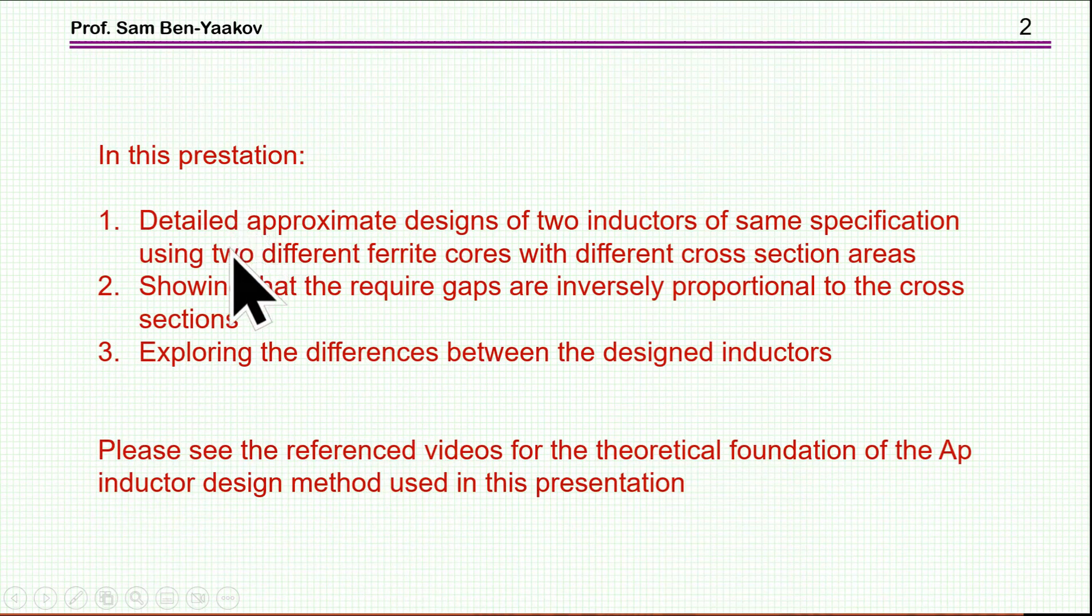In this presentation, I'm going to cover and show a detailed, although approximate, design of two inductors of same specification using two different ferrite cores with different cross-section area. I'm going to demonstrate that the required gaps are inversely proportional to the cross-section area and then explore the differences between the two designs.